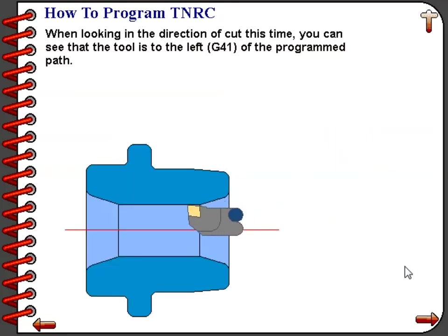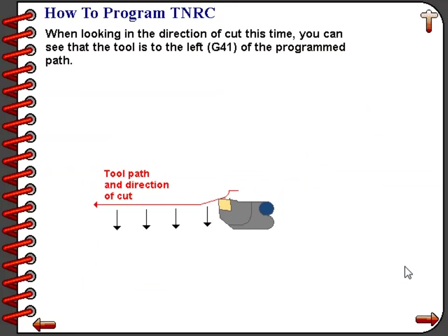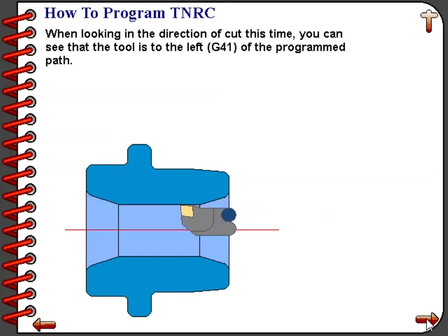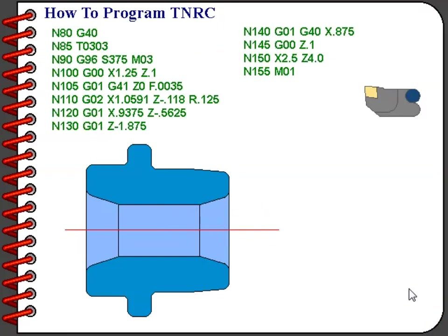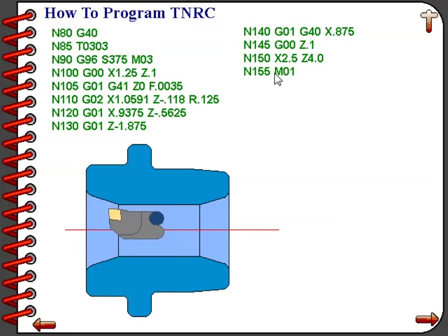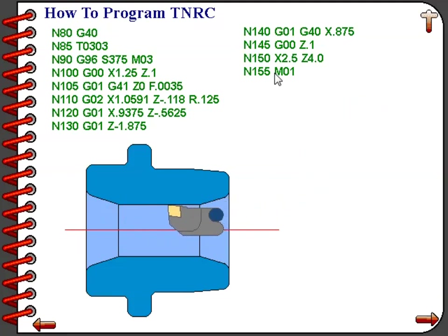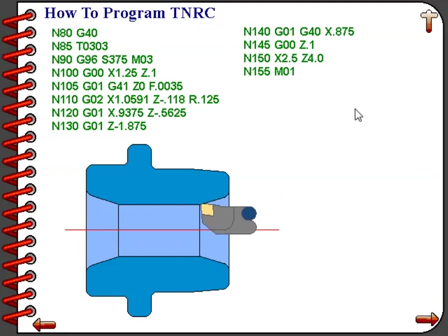Looking closely as the tool cuts the workpiece, the tool is actually on the left side of the programmed path. Watch as the animation shows just the red line representing the programmed path, and notice the tool is on the left of that line looking in the direction of cut, indicated by a red arrow. Within the program, on line 105 — G01, G41, Z0, F.0035 — we turn on tool nose radius compensation left. On line 140 — G01, G40, X.875 — we turn off tool nose radius compensation.